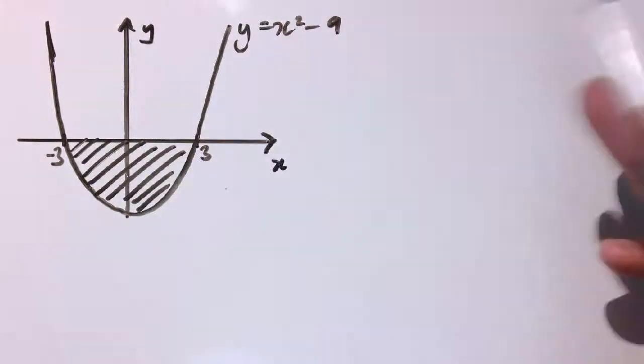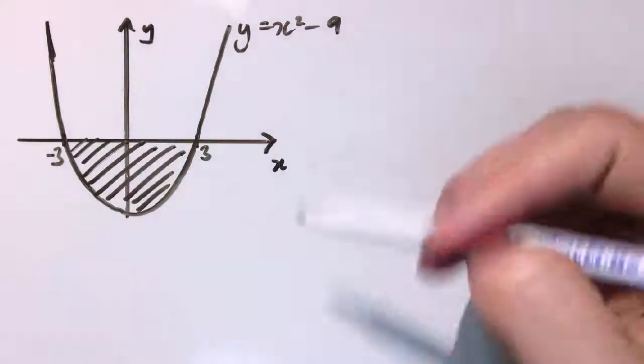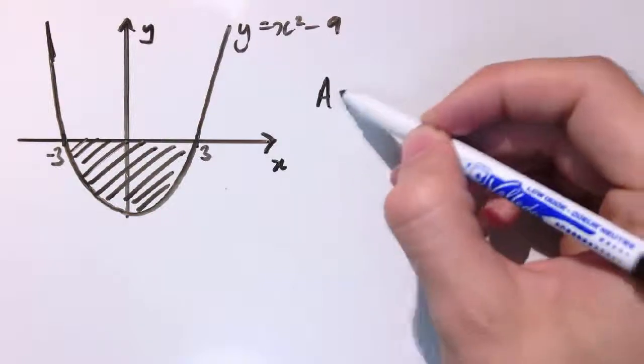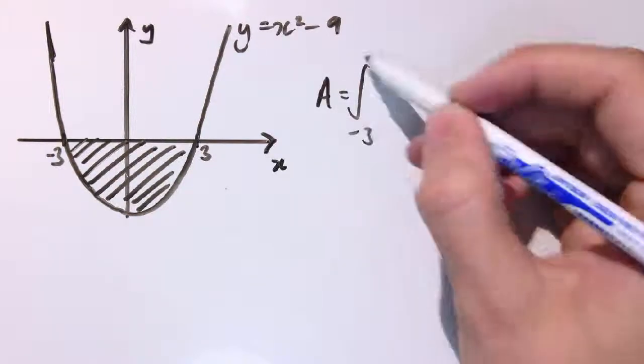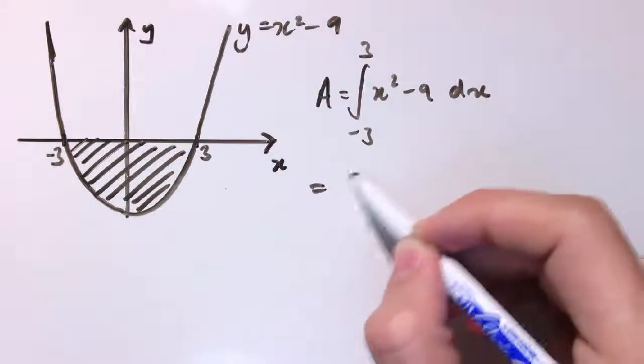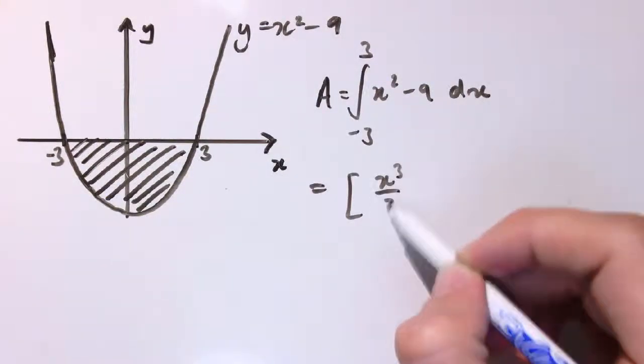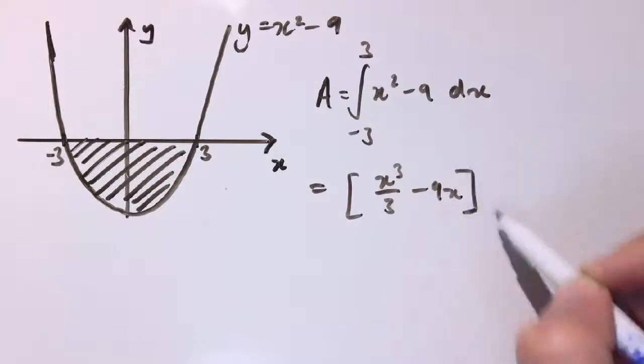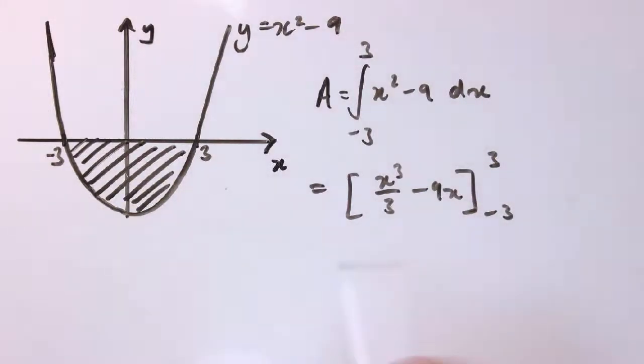So let's see what happens if we just proceed exactly as before. I'm going to try and integrate this between -3 and 3 with respect to x. So what we'd get is x³/3 - 9x between -3 and 3. If you need any help with the integrals, go back to the previous videos.